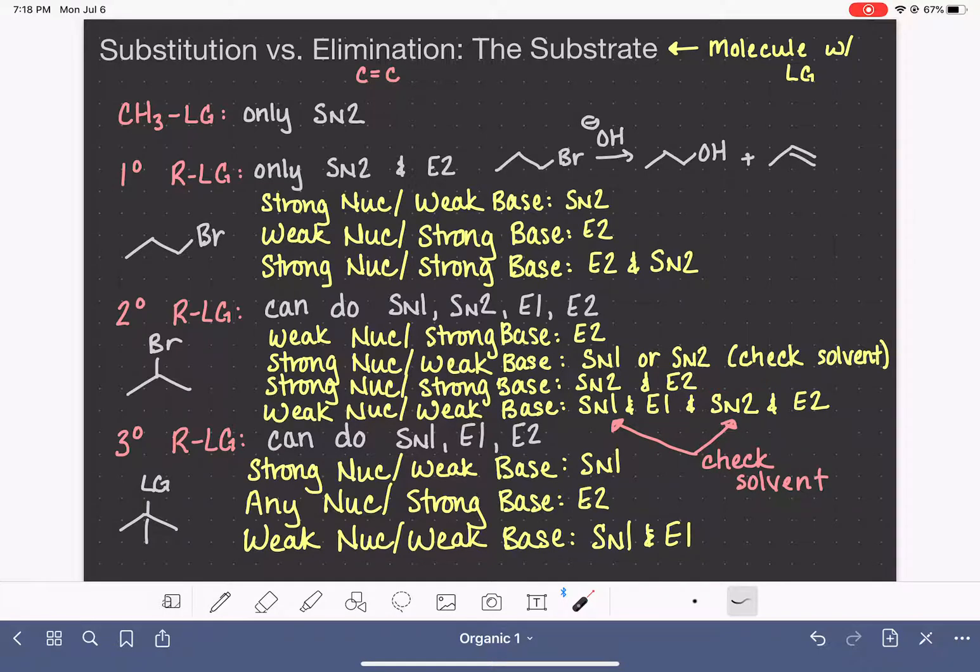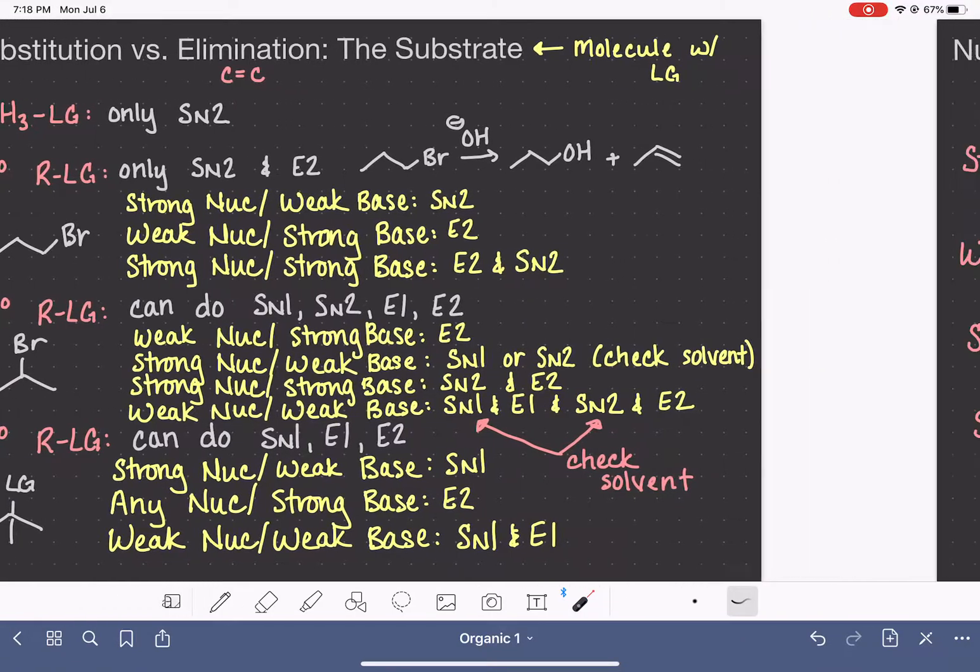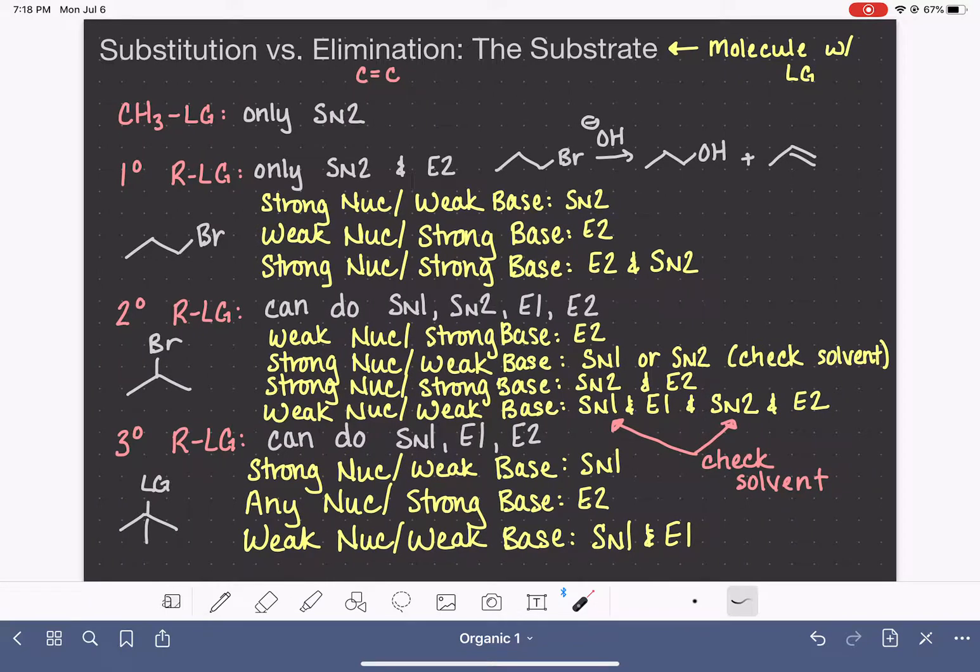So this information is kind of like a cheat sheet to help you correctly predict the products of these substitution and elimination reactions. Now, once you've narrowed down your mechanism, let's say you decide that you're going to do SN2 and E2, your brain is pretty overwhelmed because that probably took a lot of mental effort. Now you have to follow through and actually draw the product of the SN2 reaction and draw the products of the E2 reaction.